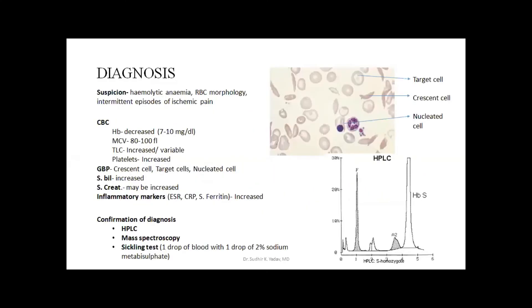Let us discuss rapidly about the diagnosis. If someone presents to you, there are a few features over which you can suspect the patient may have sickle cell disease. If the patient is having hemolytic anemia, you will order a GBP. If there is any sickling on the GBP, that is a right-away suspicion of sickle cell disease.